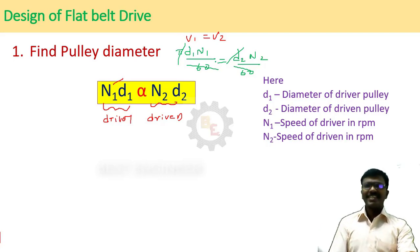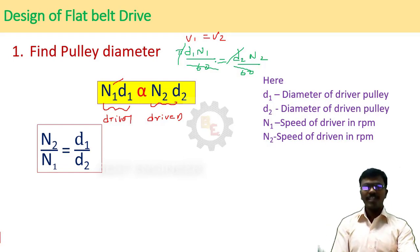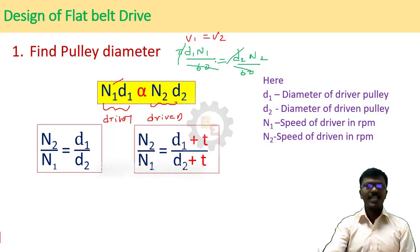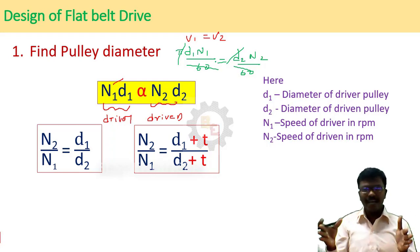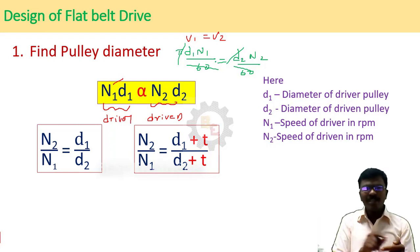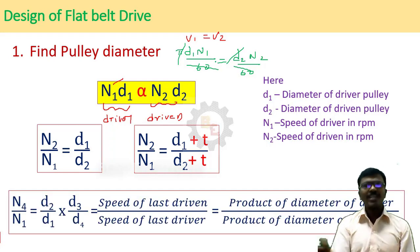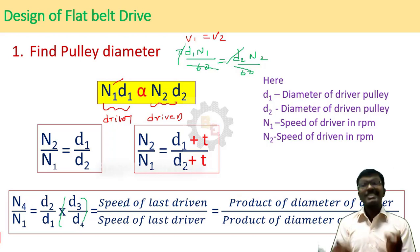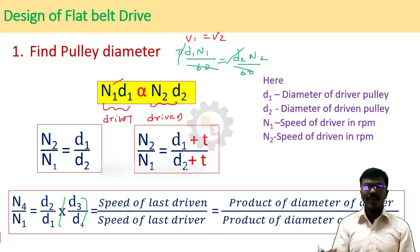We can also write this as: speed ratio = N2/N1 = D1/D2. If the thickness of the belt is given, just add that thickness to the diameter. Suppose two shafts are located far apart — in that scenario, intermittent pulleys are used. We can find the speed ratio using the formula with two pairs of pulleys: (D2/D1) × (D3/D4). In another form, the speed ratio equals the product of driver diameters divided by the product of follower diameters.